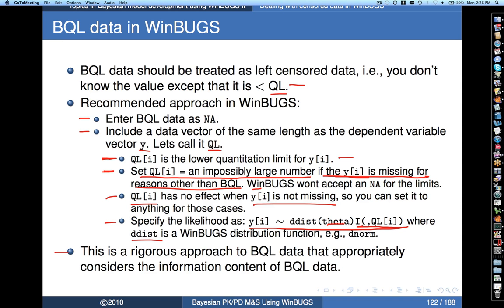A question came in: why not put zero for the lower bound of BQL? Well, it depends on the distribution you're actually using. If concentrations can't physically be below zero, one could imagine putting zero in for the lower bound. However, that doesn't mean observed values couldn't be negative — observed values have error in them, which could conceivably push them negative.